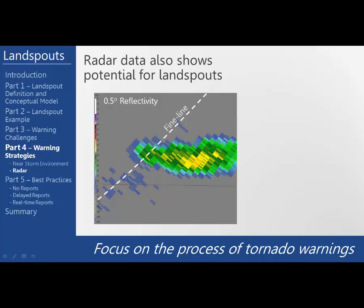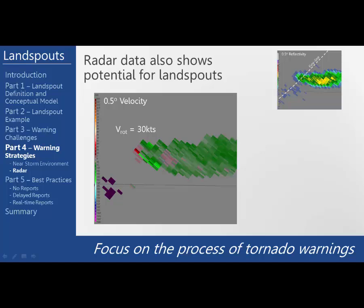Radar data also shows the potential for landspouts. Fine lines on the base reflectivity identify boundaries, which show up based on density discontinuities and denote areas of enhanced convergence and vorticity that may be too small in scale to be identified by the SPC mesoanalysis data — that is why it is always good to cross-reference the SPC meso data with radar. Base velocity can show weak rotation and often that is all you will see. Don't look for a tight couplet because most of the time that doesn't exist with landspout tornadoes, especially when the storm is beyond 30 nautical miles from the radar. Also keep in mind that the 88D is unlikely to resolve compact tornado-scale circulations beyond a few miles from the RDA.